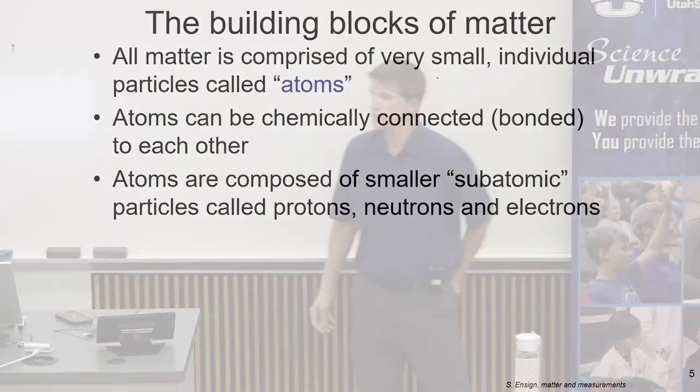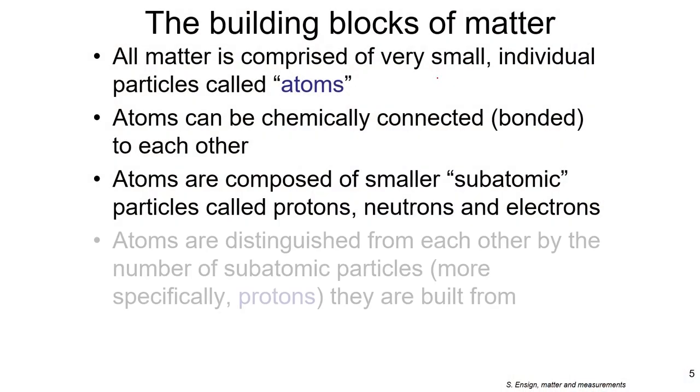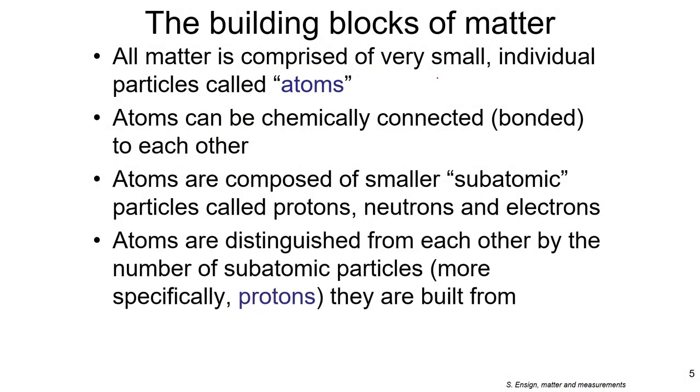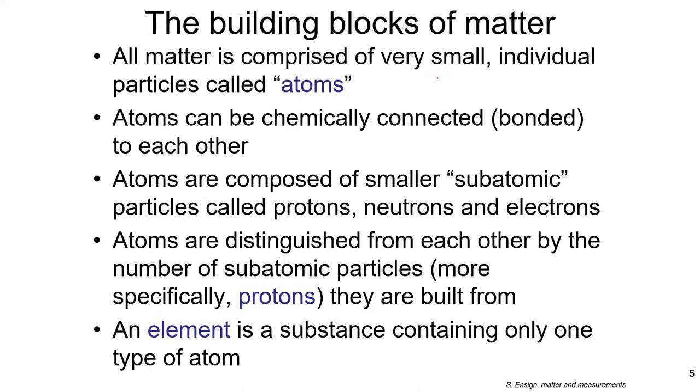Atoms are composed of smaller subatomic particles which are called protons, neutrons and electrons. Atoms are distinguished from each other by the number of subatomic particles from which they're built. Specifically, the number of protons they are built from. And so what we call an element, a chemical element, is a substance that contains only one type of atom based on the number of protons that that fundamental atom has.